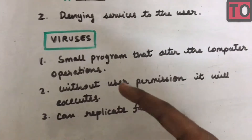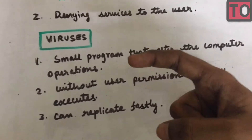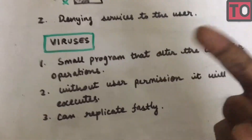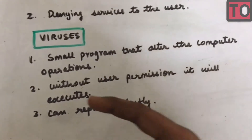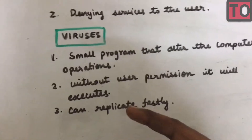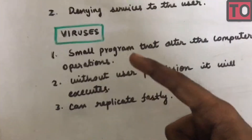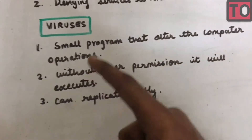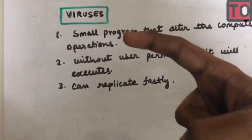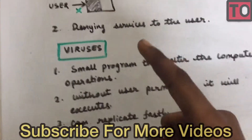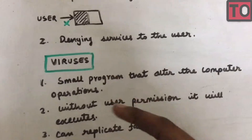The second point about viruses is they can execute in the computer without your permission. Worms can replicate fastly; viruses cannot replicate fastly. Worms can't destroy; viruses can destroy the computer. Viruses have 4 stages — you can attack the total computer.